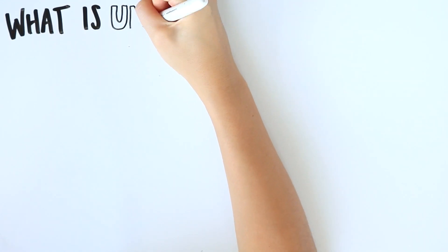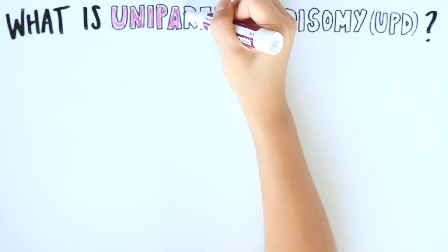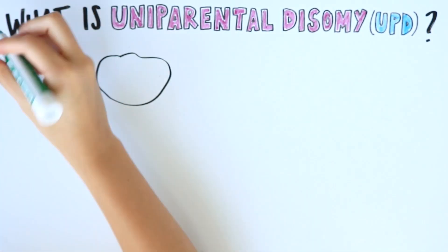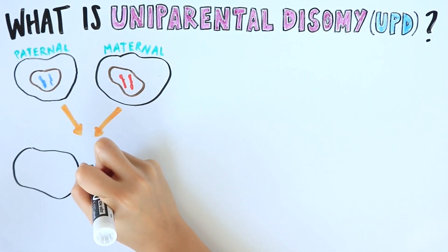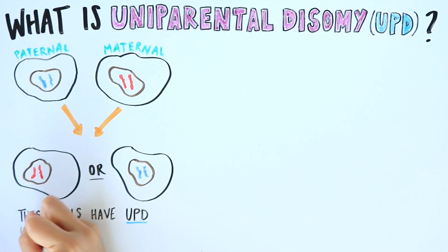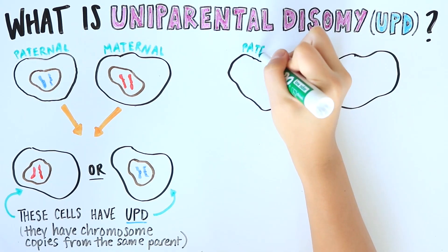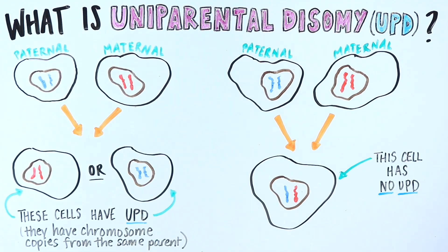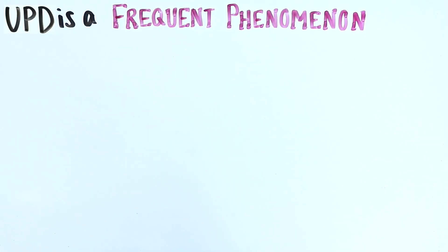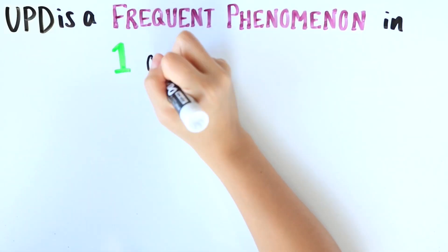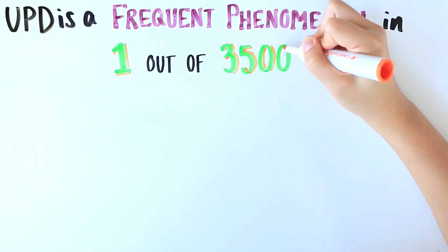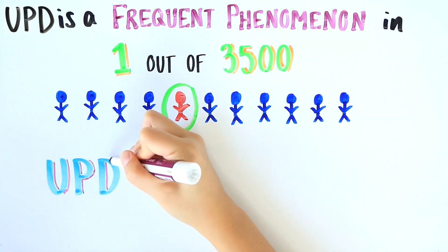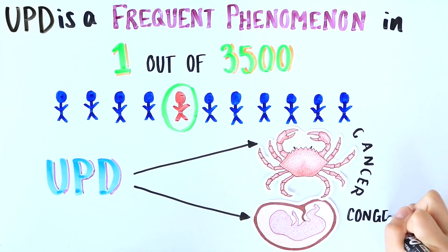Errors in chromosome inheritance can lead to abnormalities. For example, uniparental disomy, or UPD, occurs when a cell receives both copies of a particular chromosome from the same parent, instead of inheriting one copy from mom and one from dad as they should. Initially proposed by Eric Engel in 1980, UPD is a frequent chromosomal anomaly with an incidence of 1 in 3,500 people and has been linked to cancer and numerous congenital diseases.